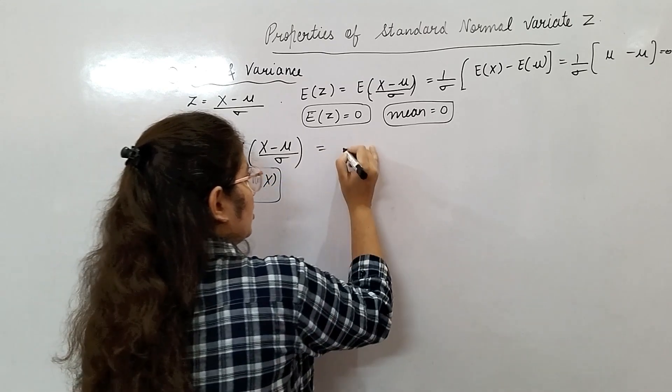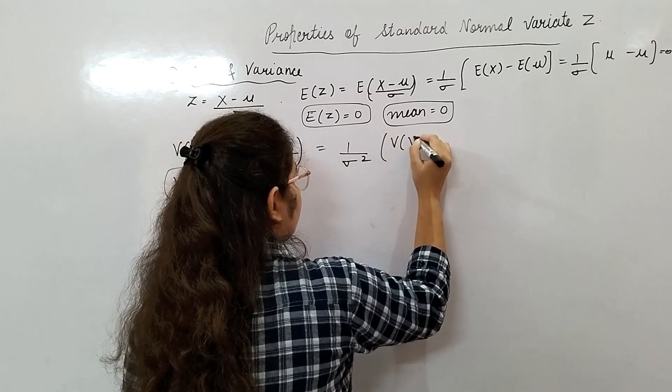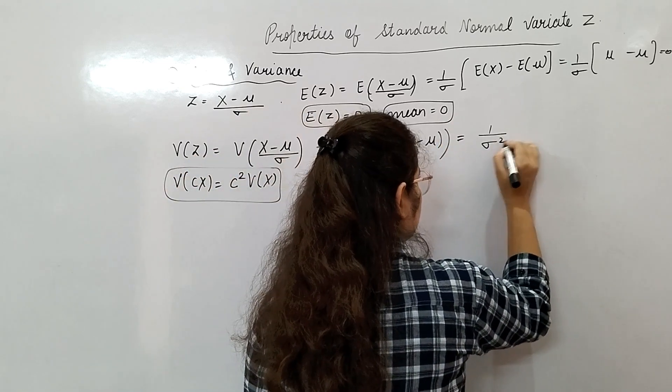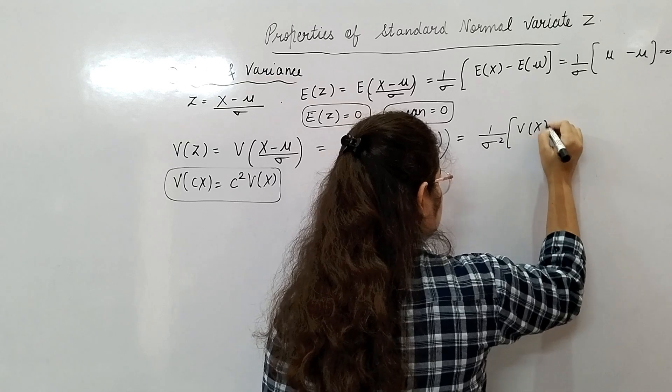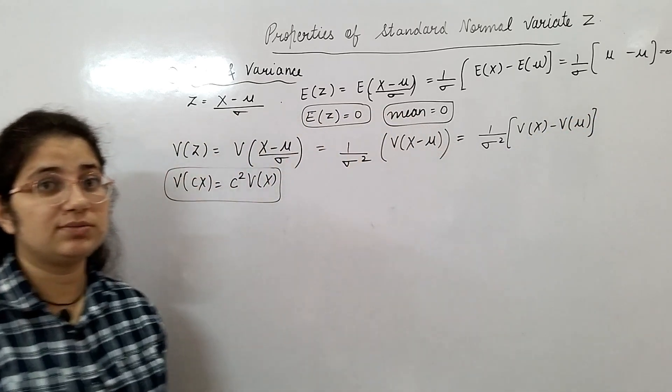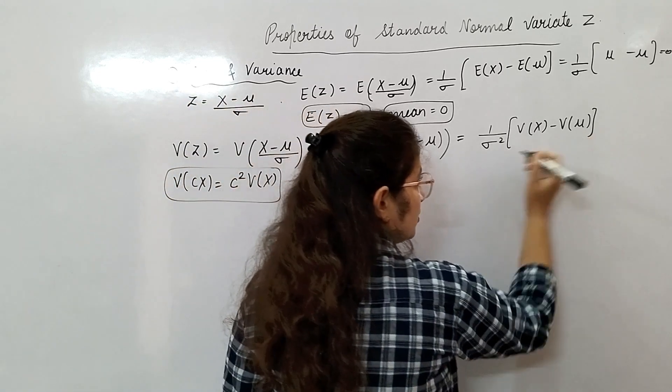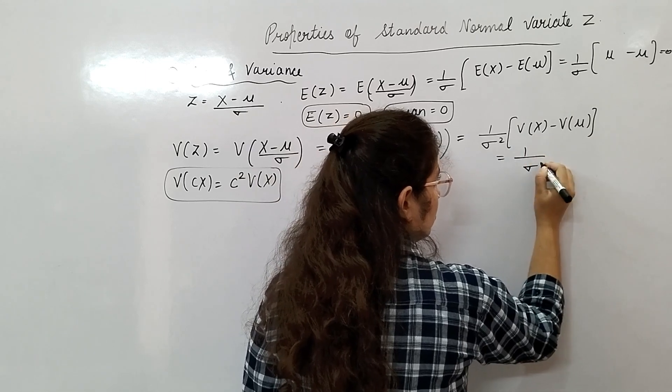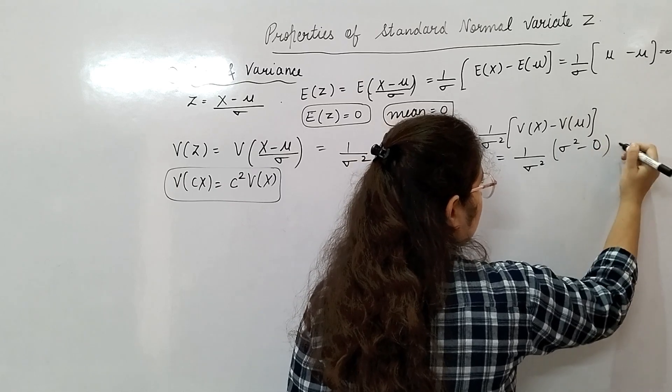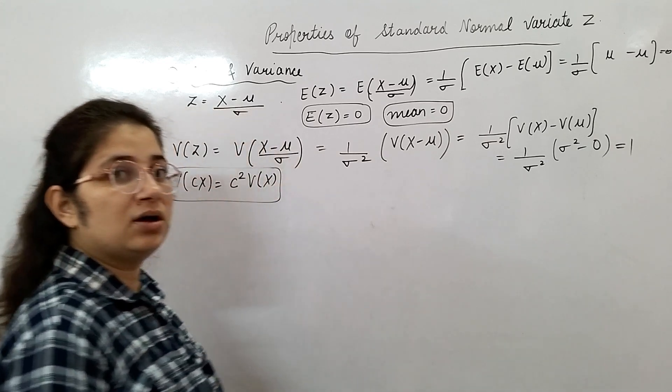I will get 1 upon sigma square variance of X minus variance of mu. Covariance term will be 0 in both of them because they are independent. Variance of constant is 0, and variance of X is sigma square minus 0. This sigma square and this sigma square cancel each other. It will be 1.